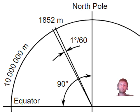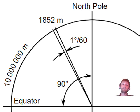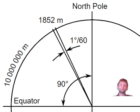You can see here the historical definition for one nautical mile, which is defined as one minute — one minute being one of the 60 parts of a degree of latitude along any line of longitude.